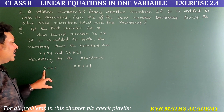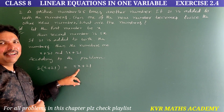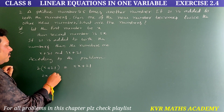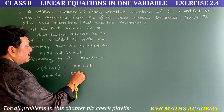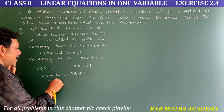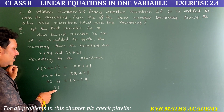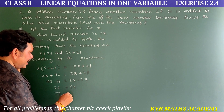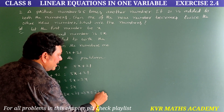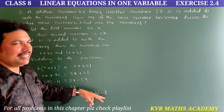So, 2(X + 21) = 5X + 21. Expanding: 2X + 42 = 5X + 21. Transferring: 42 − 21 = 5X − 2X, giving 21 = 3X. Therefore X = 21/3 = 7. First number is 7 and second number is 5 × 7 = 35.